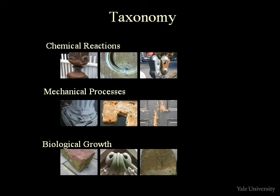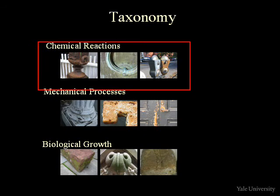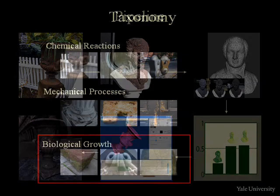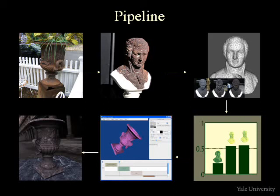To structure the big variety of interesting effects and phenomena we categorize them into three different types: chemical reactions like rusting or patination; mechanical processes like paint crackling or peeling; and finally biological growth like algae, moss or mold growing. Our pipeline can deal with all three types of effects.